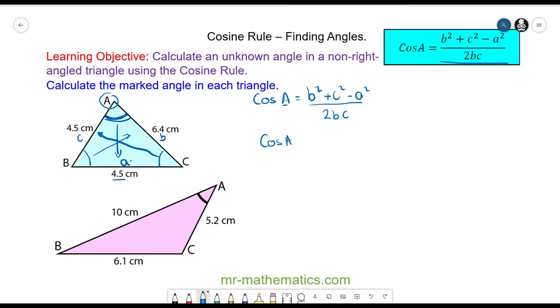So the cosine of angle A is equal to b which is 6.4 squared plus c which is 4.5 squared minus a squared which is 4.5 squared, all divided by 2 times b times c. We can see the 4.5 squared here and here will cancel because you have one number to take away itself. So we have 6.4 squared which is 40.96 divided by 57.6 and this is equal to the cosine of angle A.